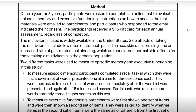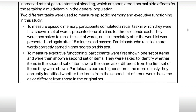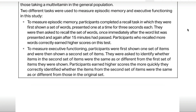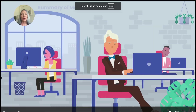Two different tasks were used to measure episodic memory and executive functioning in this study. To measure episodic memory, participants completed a recall task in which they were first shown a set of words, presented one at a time for three seconds each. They were then asked to recall the set of words, once immediately after the word list was presented, and again after 15 minutes had passed. Participants who recalled more words correctly earned higher scores. To measure executive functioning, participants were first shown one set of items and then a second set of items. They were asked to identify whether items in the second set were the same as or different from the first set. Participants earned higher scores the more quickly they correctly identified whether the items matched.